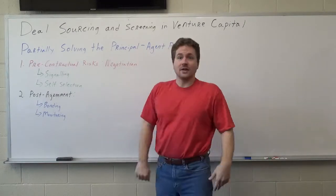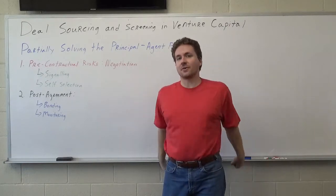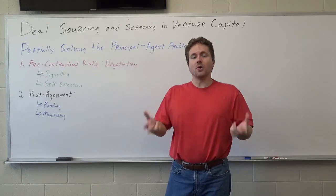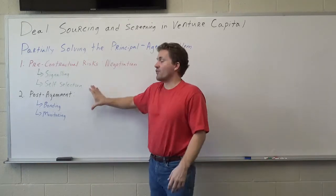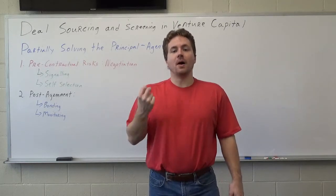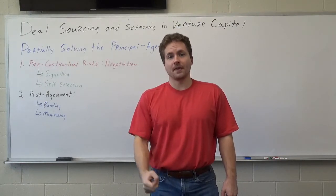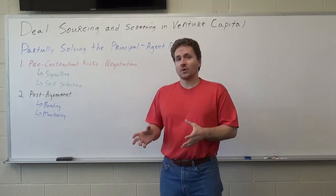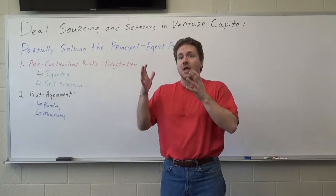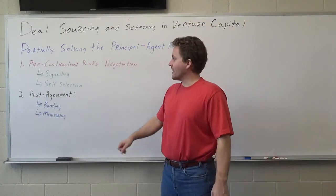Now, let's say you've given the right signals, achieved the right self-selection, and have been selected for investment as the entrepreneur. Post-agreement, we look at post-contractual asymmetry and preventing moral hazards. The first tool is bonding. Bonding basically means aligning the agent's interests with those of the principal — you as the venture capitalist write the contracts so that the entrepreneur only makes money if you're making money. That can partially resolve this problem.